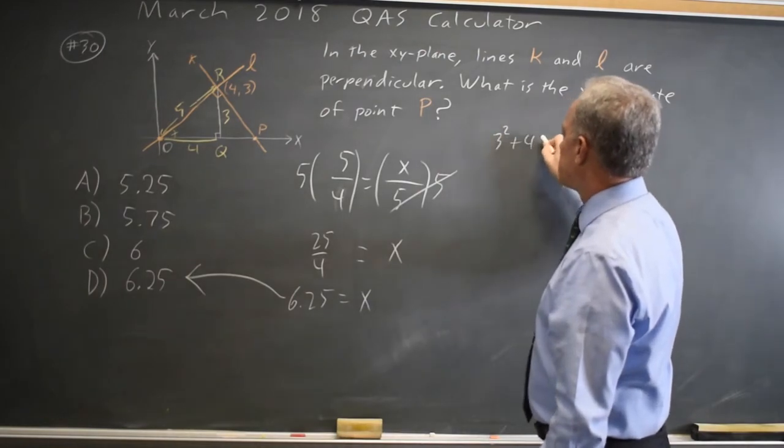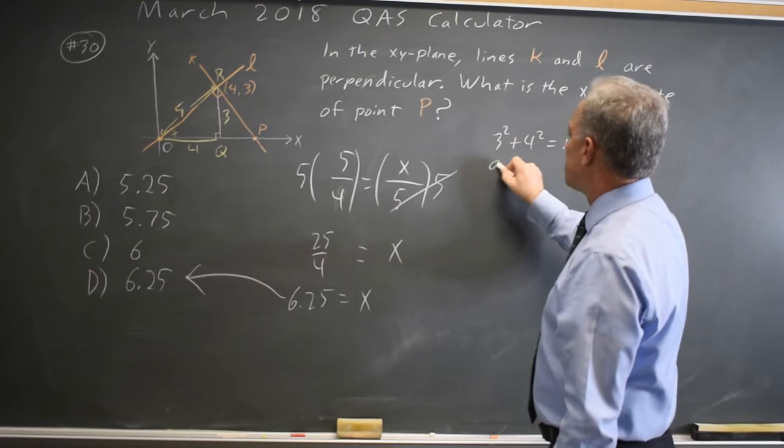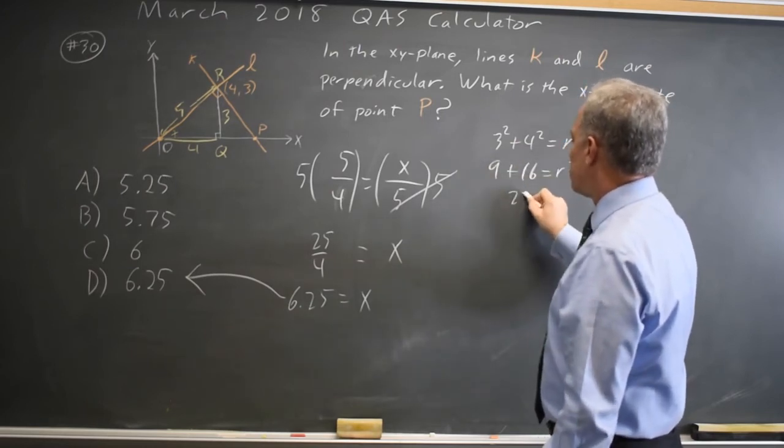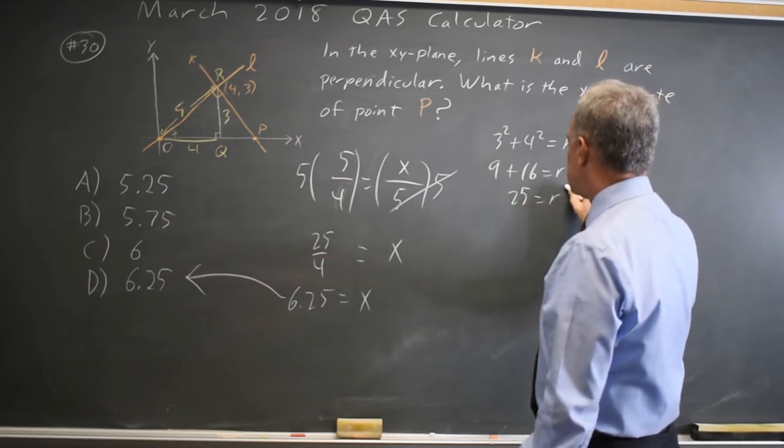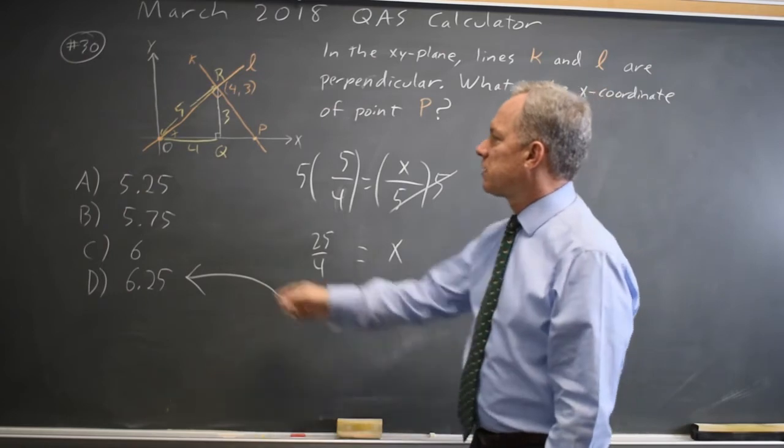3 squared plus 4 squared equals r squared, so that's 9 plus 16 equals r squared. 25 equals r squared, square root of both sides, r equals 5, which is the length of the hypotenuse.